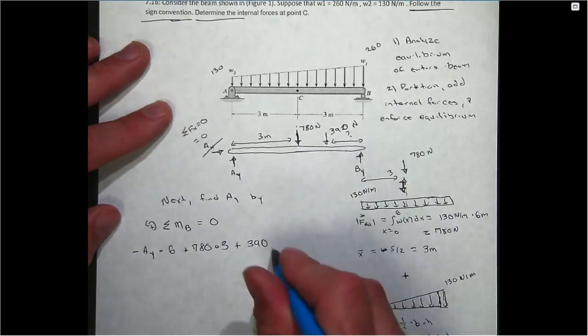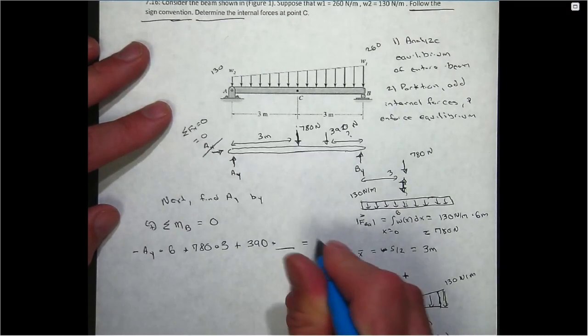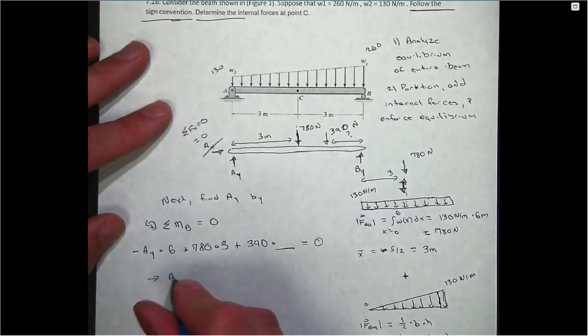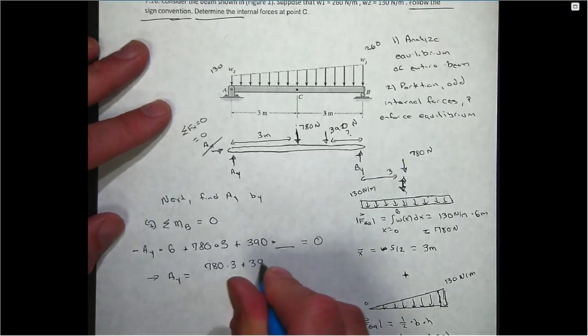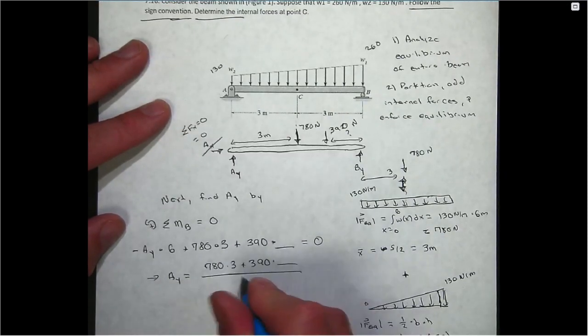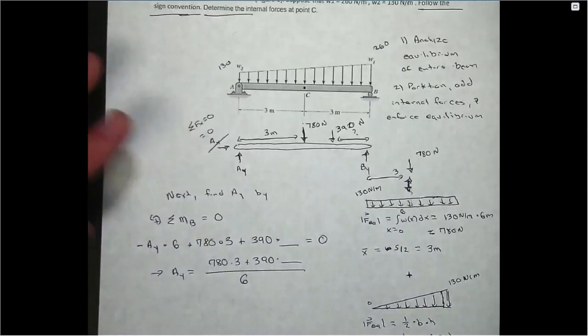That is going to serve to counterbalance the counterclockwise rotation of the equivalent single load of the rectangular load, which has 780 newtons of magnitude at a perpendicular distance of three meters. Plus, the triangular portion has magnitude 390, and you need to determine what that distance is. Since this equals zero, you'll know you're doing things right if you get a formula that looks like this. Fill in that gap, and you should be able to compute AY.